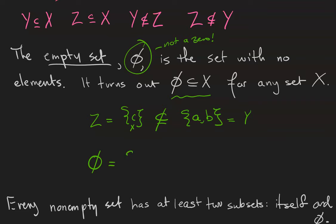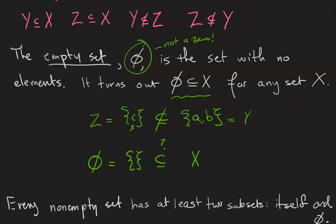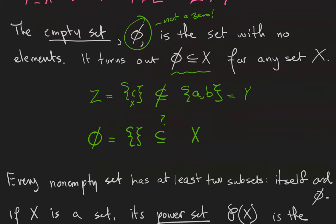Well, if I take the empty set, which contains no elements, and ask whether it's a subset of any set X, I need to point to an element that's in the empty set but not X for this relationship to not hold. And since we can't find any elements in the empty set, we have to conclude that the empty set is a subset of X. And that's true for any set X.